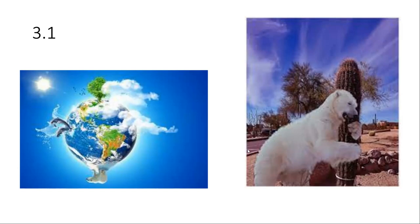On the right-hand side we have a polar bear hugging a cactus. And on the left-hand side, another image illustrating the same sort of thing — we've got very different organisms: a polar bear at the bottom, dolphins or whales in the ocean, and a tree that looks like it's coming out of northern Canada.